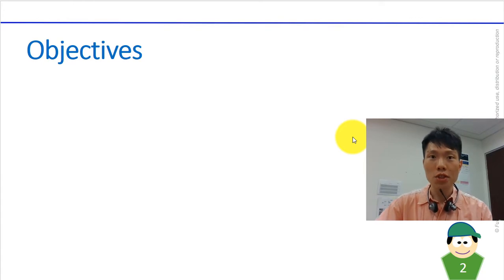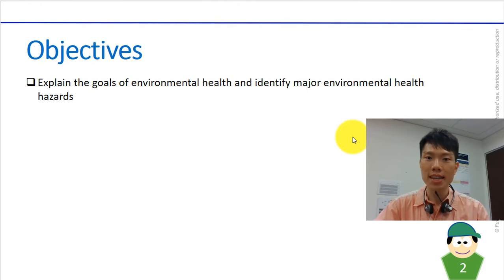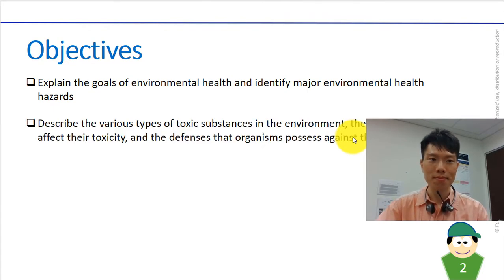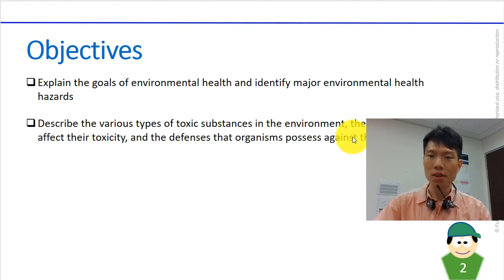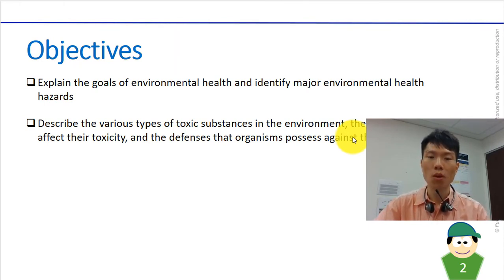At the end of this topic, you should be able to explain the goals of environmental health and identify the major environmental health hazards. You should also be able to describe the various types of toxic chemicals in the environment, the factors which affect their toxicity, and the defenses that organisms possess against them — what we can do to defend against them.